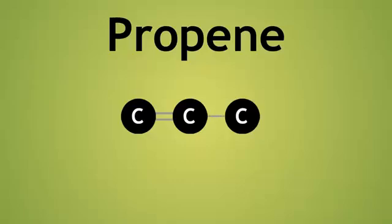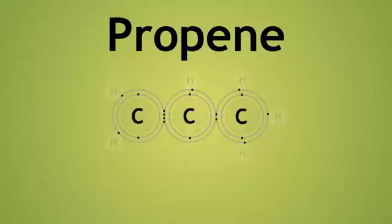We now need to fill the molecule with hydrogen atoms, to ensure that each carbon has a total of four bonds. Two hydrogen atoms are required at this end of the molecule. This middle carbon already has three bonds, and so requires just one hydrogen. And at this end, carbon has only one bond, and therefore needs three more hydrogens.